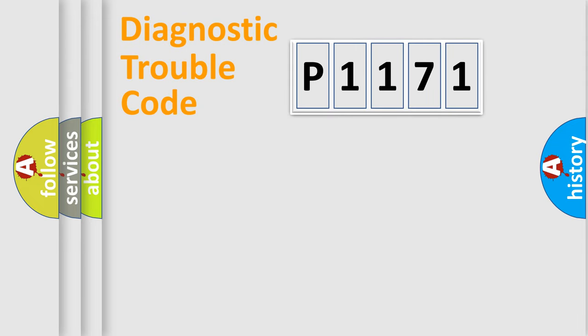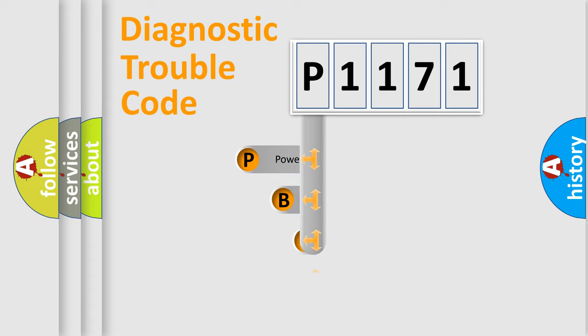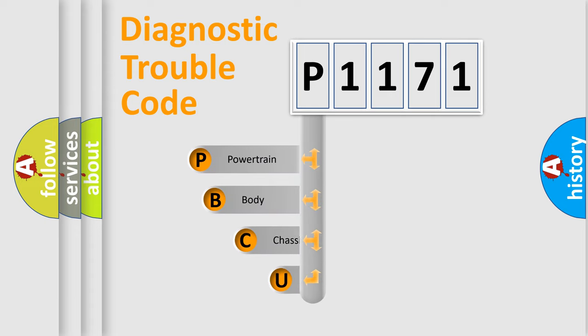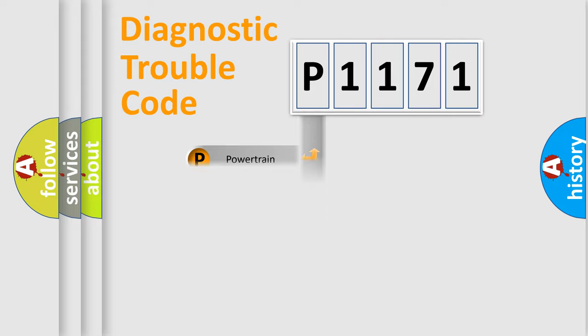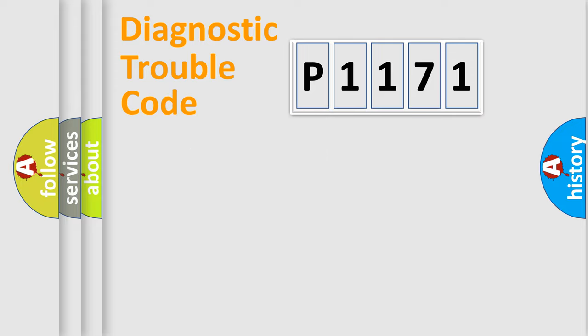Let's do this. First, let's look at the history of diagnostic fault code composition according to the OBD2 protocol, which is unified for all automakers since 2000. We divide the electric system of automobile into the four basic units: Powertrain, Body, Chassis, and Network.